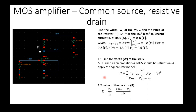One small detail: VGS is the difference between VG minus VS. VGS, usually called gate-source voltage, is the difference between the gate voltage and the source voltage. For example, if you have the DC gate voltage and the DC source voltage of the MOS, VGS is VG minus VS.